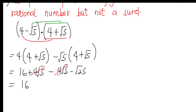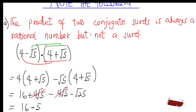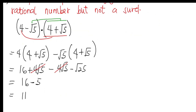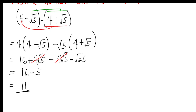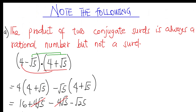Now √25 = 5, so we have 16 − 5 = 11. So the product of the two conjugate surds (4 − √5) and (4 + √5) gives us 11, which is a rational number. This confirms the first note: the product of two conjugate surds is always a rational number, but not a surd.